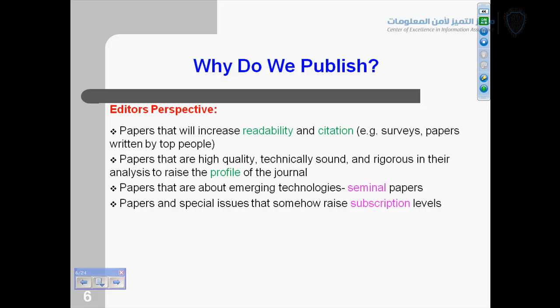Many journals have special issues, and editors want special issues in their journals to improve subscription levels and readability. A special issue is a very focused issue — for example, a special issue on biometrics or chaotic cryptography. A regular journal is general and can accept papers in sensor networks or many related fields, but a special issue focuses only on a specific subject. Editors are always looking for special issues because they improve the subscription level of the journal.